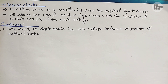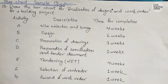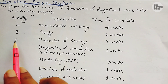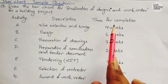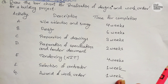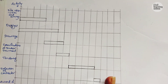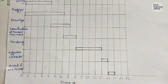Let us look at a question. I have also drawn an example bar chart for this diagram, though you may not be asked to draw a bar chart in the exam, but it is necessary to know how one looks. The activities are A through F: activity A is site selection and survey, B is design, C is preparation of drawing, and the time allocated for completion is shown. If we solve this question we get this solution.